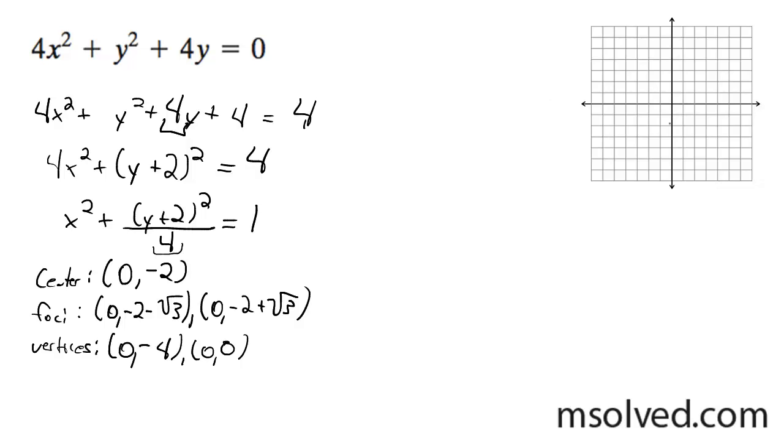Alright, so we can go ahead and graph this, 0, negative 2, and my x is just 1, and then our negative root 3 is 1.7, so a little closer, 1.7 away from the center, there we go. So we got that, roughly, and that's it.